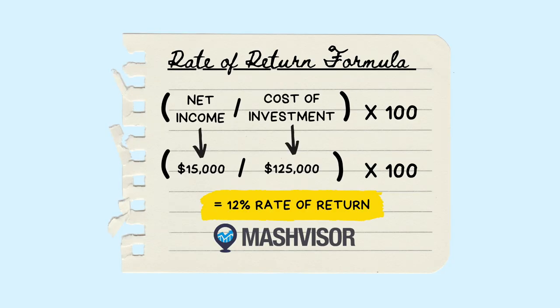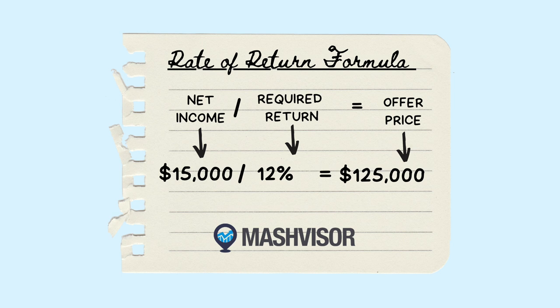If you're looking at a property that has a net income of $15,000, and you pay $125,000 for that building, you will get a rate of return of 12%. It works in the opposite direction as well. Many investors go into their property searches knowing they want a building with a set percentage — say, at least 12%. If you find out the property has $15,000 net annual income, you know by applying your 12% benchmark that you cannot go higher than $125,000 when negotiating for the property.